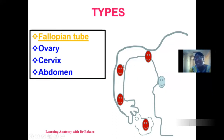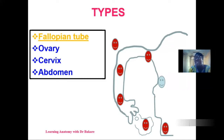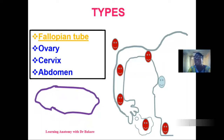We could also have fertilization in the ampulla region of the fallopian tube where the fertilized egg passes through the uterus and descends further to be implanted in the cervix. We could also have implantation in the abdominal region, within the peritoneal cavity. Out of all the different sites, the fallopian tube is the most common site for ectopic pregnancy.